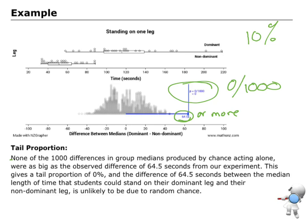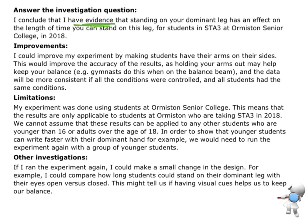First of all, I'm going to interpret that value of 0 out of 1,000. I'm going to say none of that 1,000 differences were produced, were as big as that observed difference of 64.5 seconds. So that means my tail proportion is 0%, and that difference of 64% there is unlikely just to be due to random chance. That means I can say I have got enough evidence that standing on your dominant leg has an effect on the length of time you can stand for the students that I tested. I can then go and talk about improvements. How could I improve the accuracy? Because if I can improve the precision of my measuring, then that would increase the precision of my results as well.